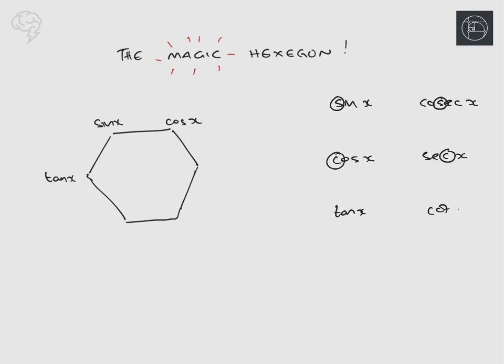And tan x and cot x, third letter is T, first letter is T, they match. So that's a nice little way of remembering it. So reciprocal of sine x is cosec x, reciprocal of tan x is cot x, the reciprocal of cos x is sec x, and then in the middle we're going to put a number 1.